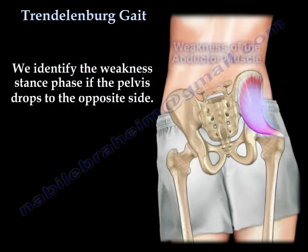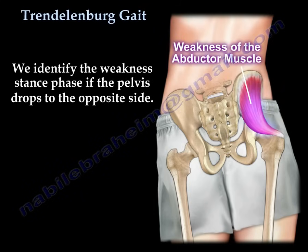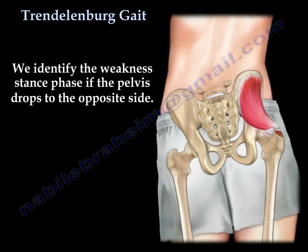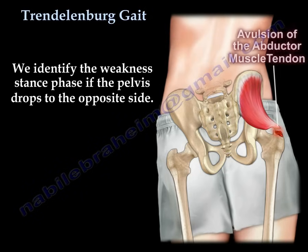We identify weakness during the stance phase if the pelvis drops to the opposite side. Here you can see an example of weakness of the abductor muscle as well as avulsion of the abductor muscle tendon.